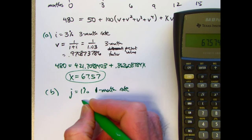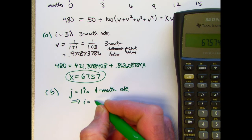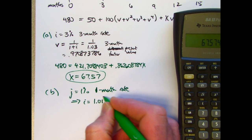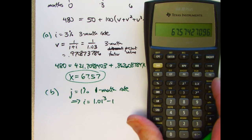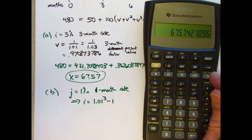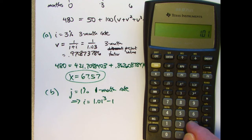So the three-month rate is going to be 1.01 to the third minus 1. It'll be a little bit higher than 3% because of compounding. Let's go ahead and figure out what that is. So 1.01 to the third power.